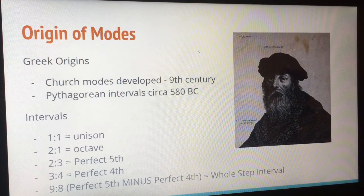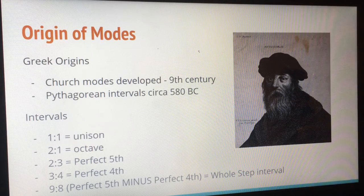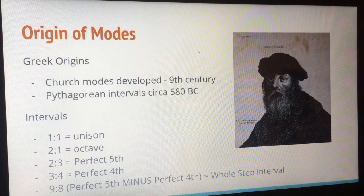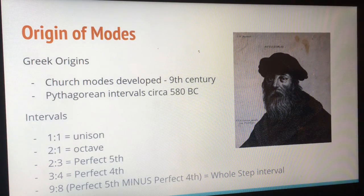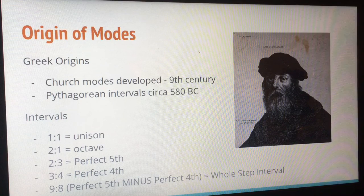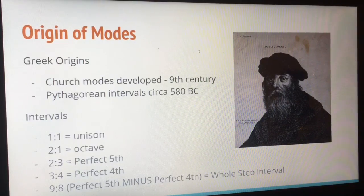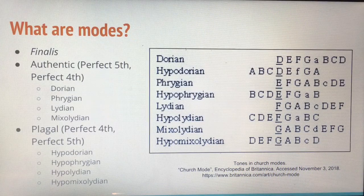Modes originated in ancient Greece, but the church modes that we know them as developed in the ninth century due to theories developed with mathematical intervals by Pythagoras around 580 BC. These intervals were found by Pythagoras plucking on a string at different lengths. Lengths of a one-to-one ratio created a sound of a unison, two to one for an octave, two to three for a perfect fifth, and three to four for a perfect fourth. When you subtract the perfect fifth and the perfect fourth, you get a whole-step interval with a nine-eighths ratio. Modes are built on these intervals.